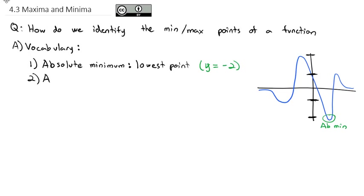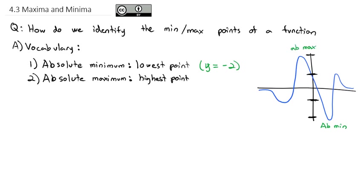The other word we need to know is, as you might expect, the absolute maximum, which is the highest point on the graph. The highest point on this graph is up at this top peak — that's the absolute maximum, at a height of 2. So y equals 2 is the absolute maximum of this graph.